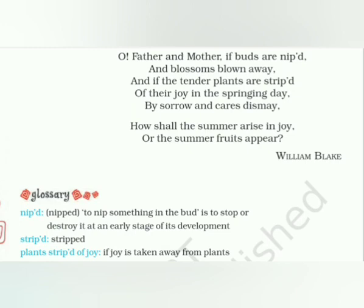If the tender plants are stripped of their joy in the springing day — the young plants are meant to be growing in the spring season. By sorrow and cares dismay — by making him sad and worried — he's feeling hopeless, restless, having a terrible time. How shall the summer arise in joy or the summer fruits appear? In other words: how will I be happy? What will my future be? What will I give to the world if you make me sad all the time by sending me to school?